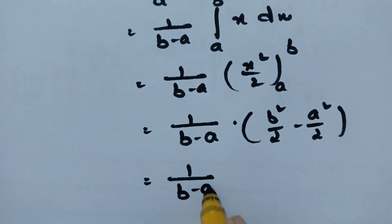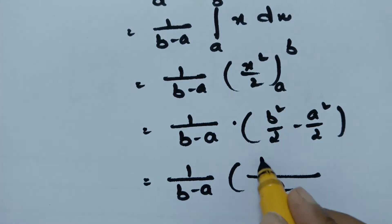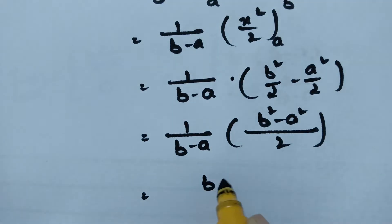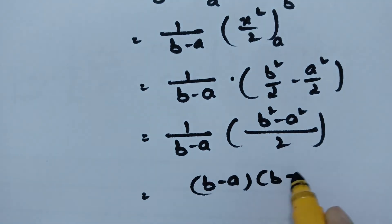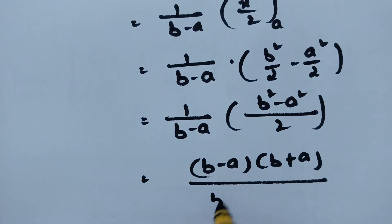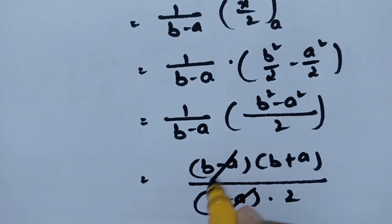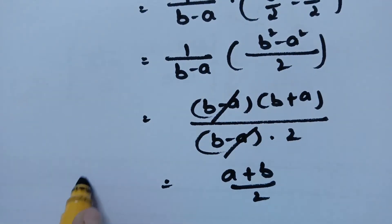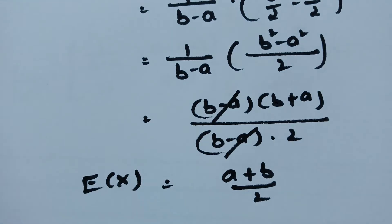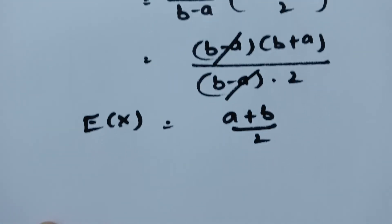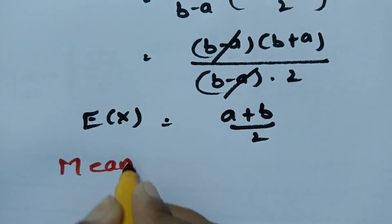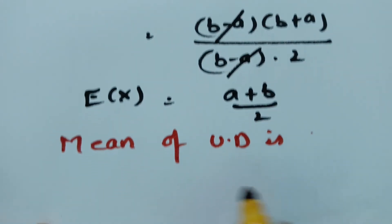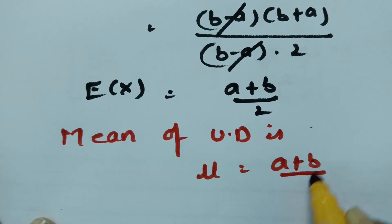This gives 1/(b minus a) times (b squared over 2 minus a squared over 2), which is (b squared minus a squared) divided by 2(b minus a). Factoring b squared minus a squared as (b minus a)(b plus a) and cancelling (b minus a), we get (a plus b) divided by 2. So the mean of the uniform distribution is μ equals (a + b)/2.